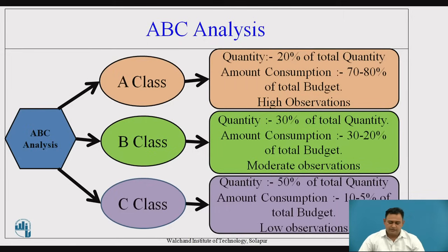Coming to the C Class material: the overall quantity is up to 50% of total quantity, and the amount consumed is from 5% to 10% of the overall total budget. So, as compared to A Class and B Class, C Class — even though they are 50% of total quantity — the amount consumption is only 5% to 10%, so here we go for lower observation. These are the three classes in ABC Analysis.